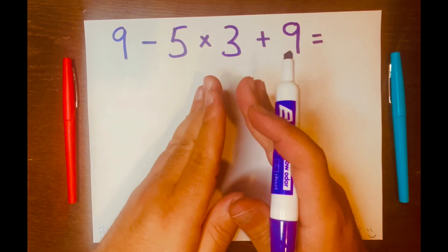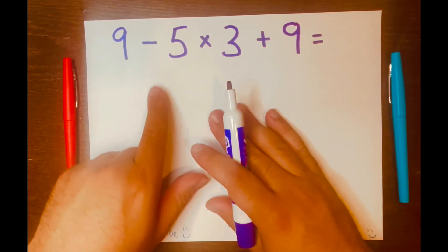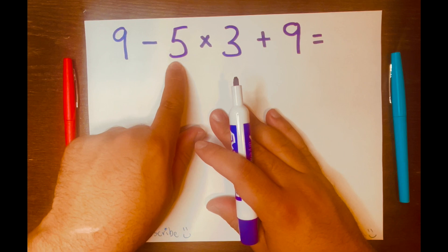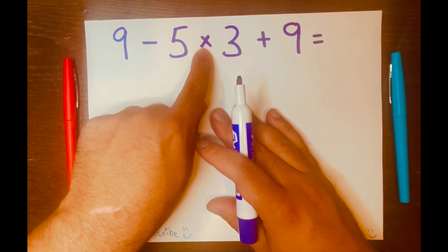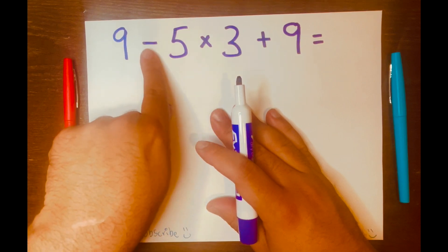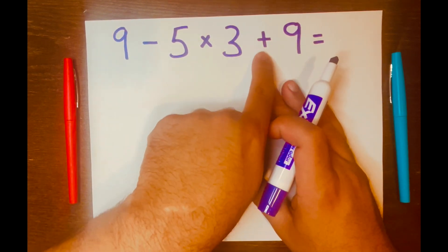And according to PEMDAS, you read from left to right. So nine minus five will not go first because multiplication, according to PEMDAS, is a higher level than subtraction and also higher level than addition.